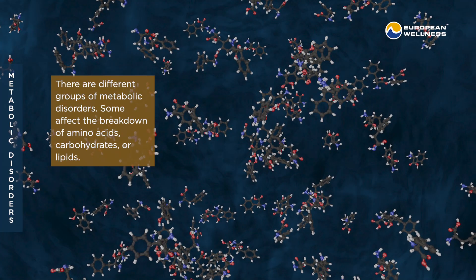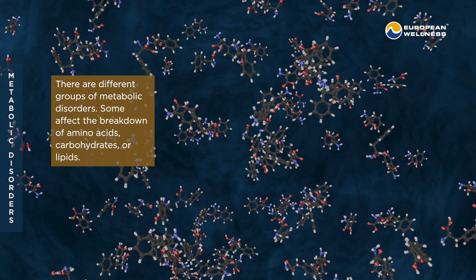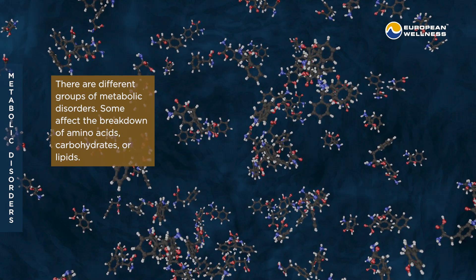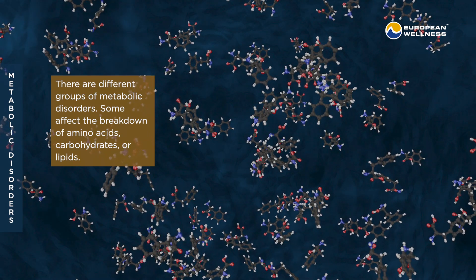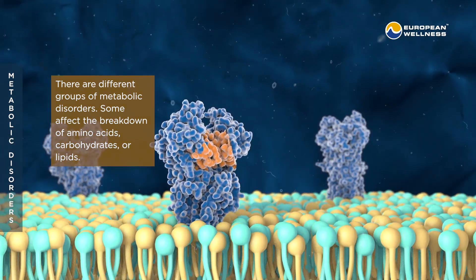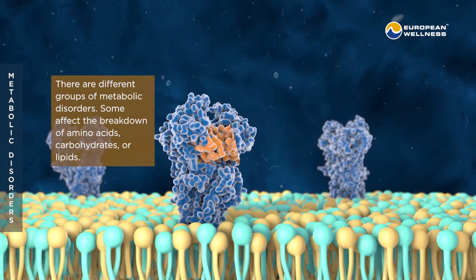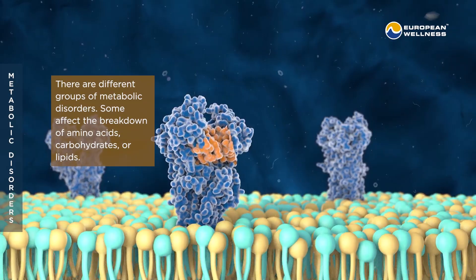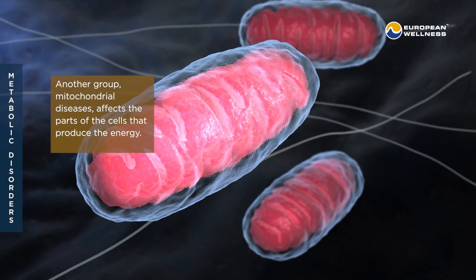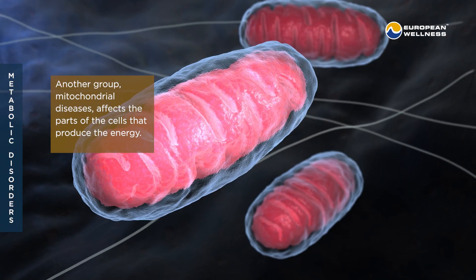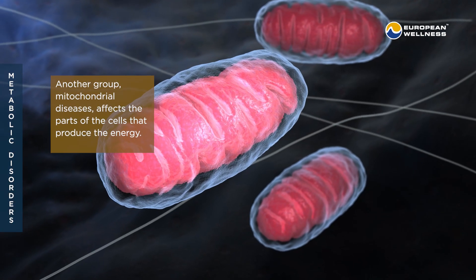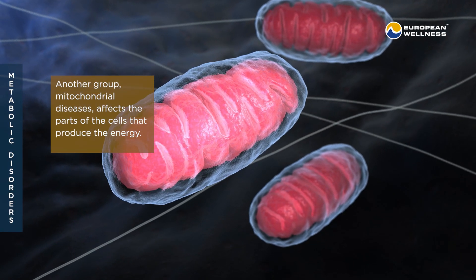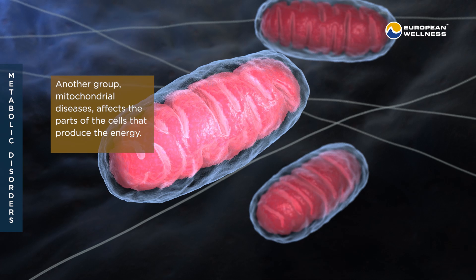There are different groups of metabolic disorders. Some affect the breakdown of amino acids, carbohydrates, or lipids. Another group, mitochondrial diseases, affects the parts of the cells that produce energy.